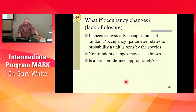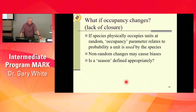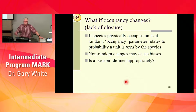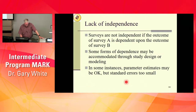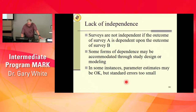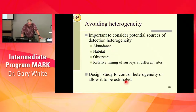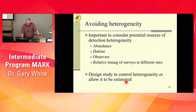What if occupancy changes — lack of closure? You don't get true occupancy back; you get whether the unit is used by the species. That's a very different quantity, and probably not something you're necessarily interested in. Lack of independence — some forms of dependence can be accommodated through study design — that's the removal example I talked about earlier. Avoiding heterogeneity: if you know you've got observer issues, you want to make sure your observers are set up in a way that you can account for the observer effect.